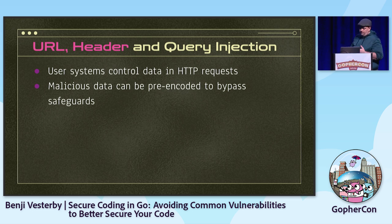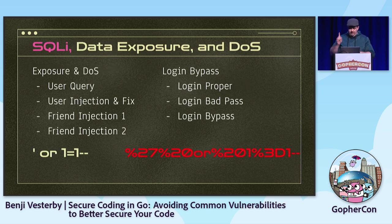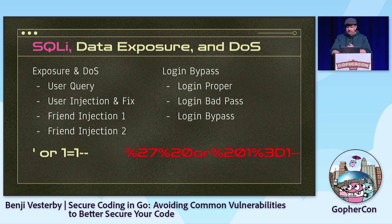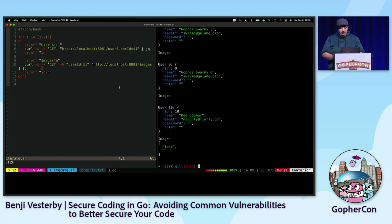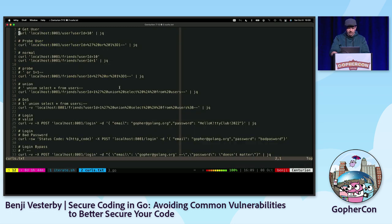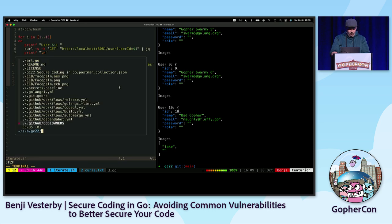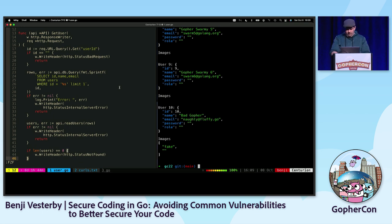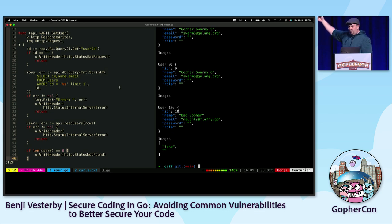We're going to talk about URL, header, and query injection first, using this application and my cheat slide. The primary thing we're looking at is SQL injection. At the bottom of the slide, on the left is the most common SQL injection you will ever see — what attackers use to determine whether your application is vulnerable. On the right is a URL-encoded version of that. Can you find the SQL injection in the code on the left?